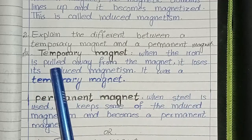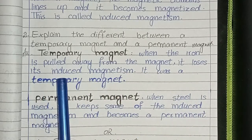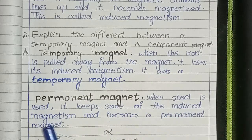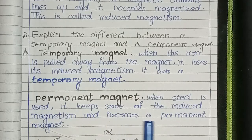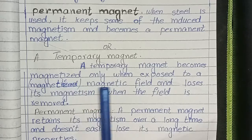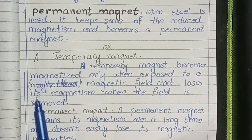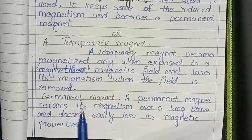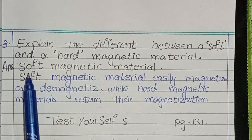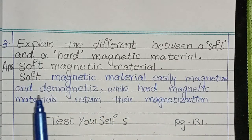Explain the difference between a temporary magnet and a permanent magnet. When iron is pulled away from the magnet, it loses its induced magnetism — it was a temporary magnet. When steel is used, it keeps some of the induced magnetism and becomes a permanent magnet. A permanent magnet retains its magnetism over a long time and doesn't easily lose its magnetic properties. Explain the difference between a soft and a hard magnetic material: soft magnetic materials easily magnetize and demagnetize, while hard magnetic materials retain their magnetization.